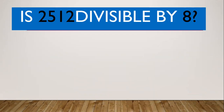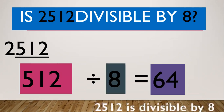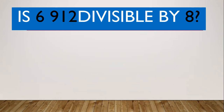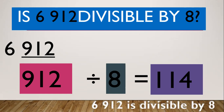Another one: is 2,512 divisible by 8? The last three digits formed is 512. 512 divided by 8 equals 64. So therefore, the original number, 2,512, is divisible by 8. Another one: is 6,912 divisible by 8? The last three digits formed is 912. 912 divided by 8 equals 114, so we get the exact value. Therefore, the original number, 6,912, is divisible by 8.